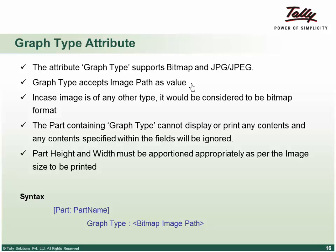The part containing the graph type attribute cannot contain anything else apart from the image. Even though it's a part and should have a line and a field, this field must be an empty dummy field — it cannot display content. Although you don't display anything, you still must provide the full hierarchy definition, the graph type, and the entire path to the image. You also need to ensure that the part height and width are set appropriately as per the image size.